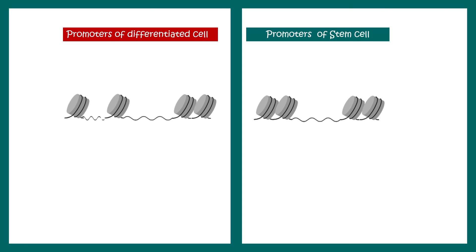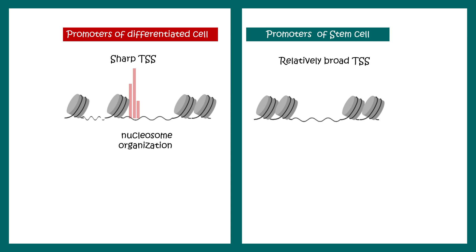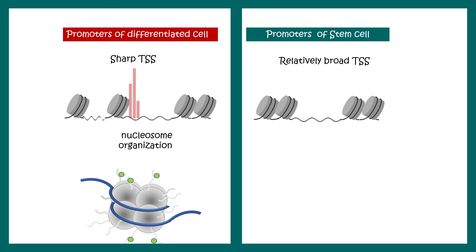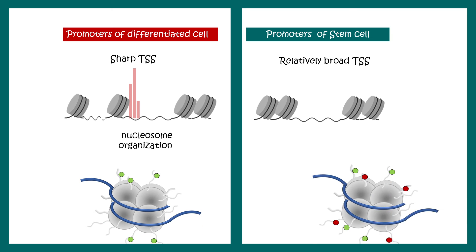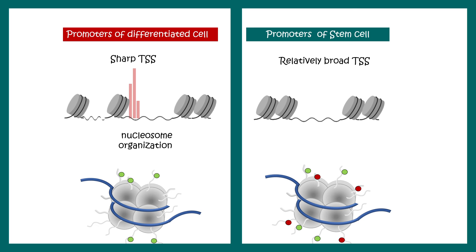There can also be promoter-related changes. Promoters of differentiated cells are very different from those in stem cells — they show different nucleosomal organization and different histone marks on the nucleosomes. In stem cells there is a balance between activatory and repressive marks, whereas in a particular differentiated cell there are selective activatory or selective inhibitory marks. These patterns are very different from a stem cell, and this combination of factors makes one cell type different from another.